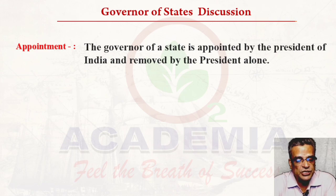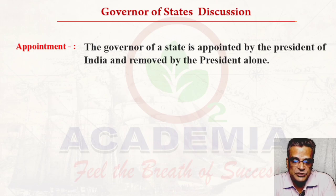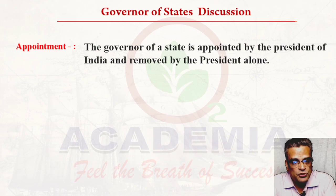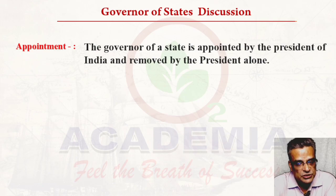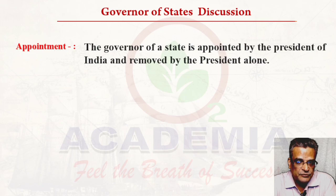The difference between the President and the Governor is that the President has no discretionary powers, but the Governor has discretionary powers to some extent. When the Governor is enjoying this power, the Governor can act by his own decision. The Governor has discretionary powers.